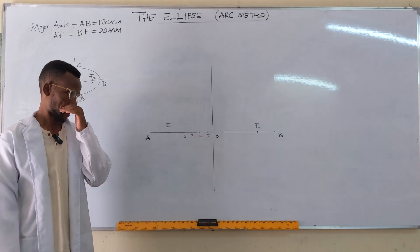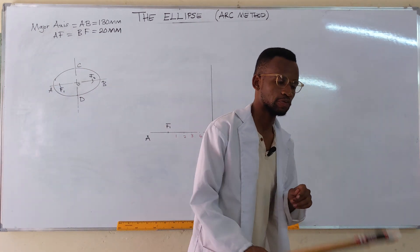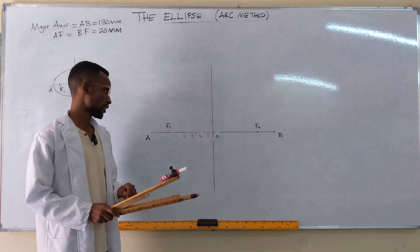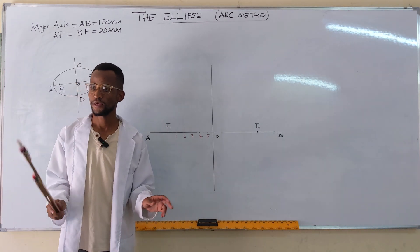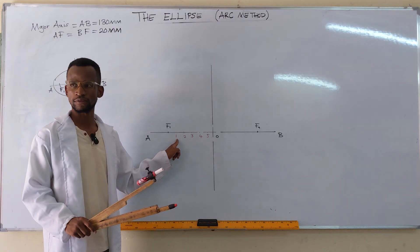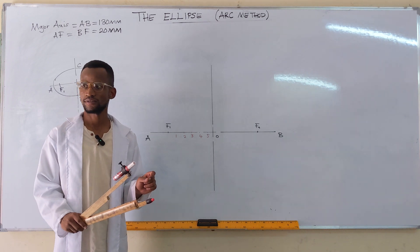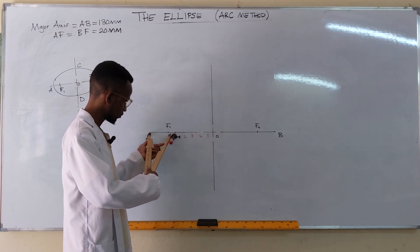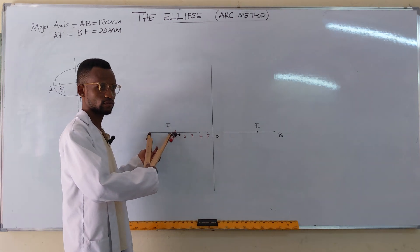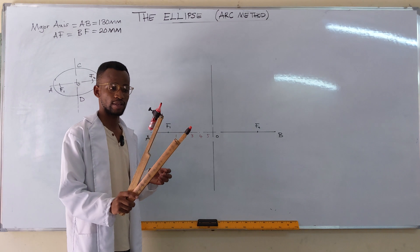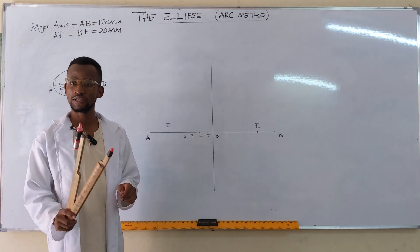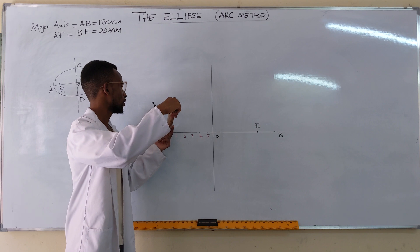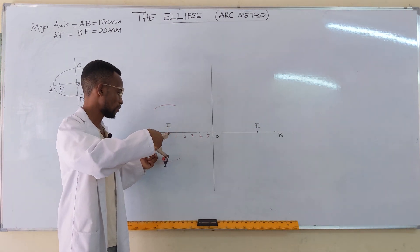After making those marks, get your compass and place it at point A, open it to distance 1 — meaning you get the distance A1. Without changing the radius, stand at the focal point and strike an arc above and below the major axis. These construction arcs should be drawn faint.